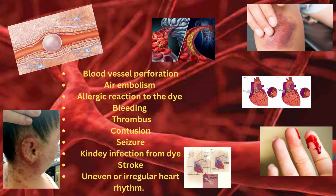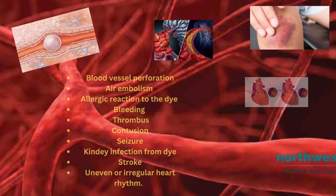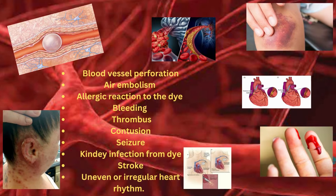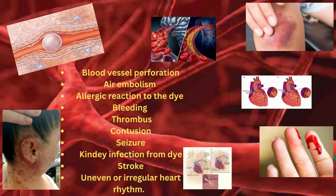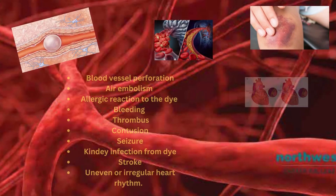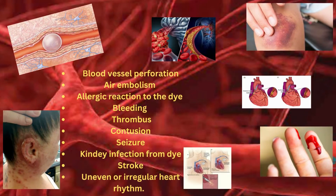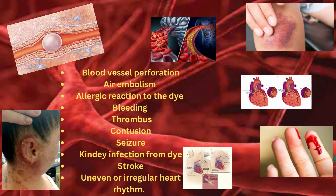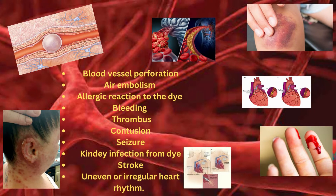Additional risks include strokes and irregular heart rhythms or arrhythmias. These are significant risks that can occur in patients who go through cath lab procedures, but it cannot be said that these will occur in all patients who undergo the procedures. These are risks that may potentially occur.